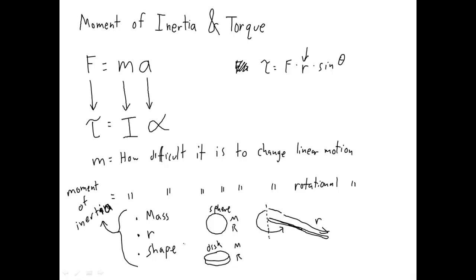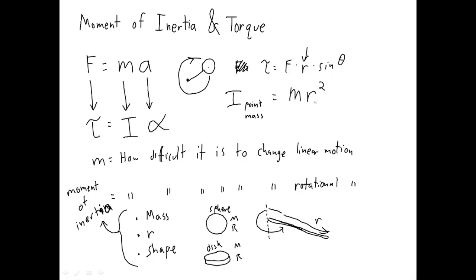For this class, you're only going to be responsible for one moment of inertia — the moment of inertia of something called a point mass. A point mass is basically an approximation we've been using all year — we're pretending all the mass is concentrated at one single point. Back when we were doing those problems where we were whirling rocks around on strings, we were pretending those rocks were point masses. The moment of inertia of a point mass is simply M R squared — the object's mass times the distance from the pivot point, the lever arm, squared.